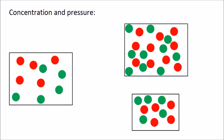First let's look at concentration and pressure. Increasing the concentration and increasing the pressure both lead to an increase in the frequency of collisions because the particles are more crowded together. Let's take this as a container with some particles in it — the red particles and the green particles which need to react with each other. If we increase the concentration, then the particles are more likely to collide with each other and therefore react, because they are more crowded together.